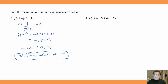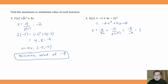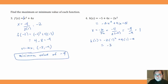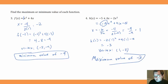Number 4: h(x) = -5 + 4x - 2x², which we rewrite as -2x² + 4x - 5. Using x = -b/(2a): b = 4, a = -2, so x = -4/(2 × -2) = -4/-4 = 1. Find h(1): -2(1²) + 4(1) - 5 = -2 + 4 - 5 = -3. The vertex is (1, -3). This parabola opens down because a = -2 is negative, so it has a maximum value of -3.